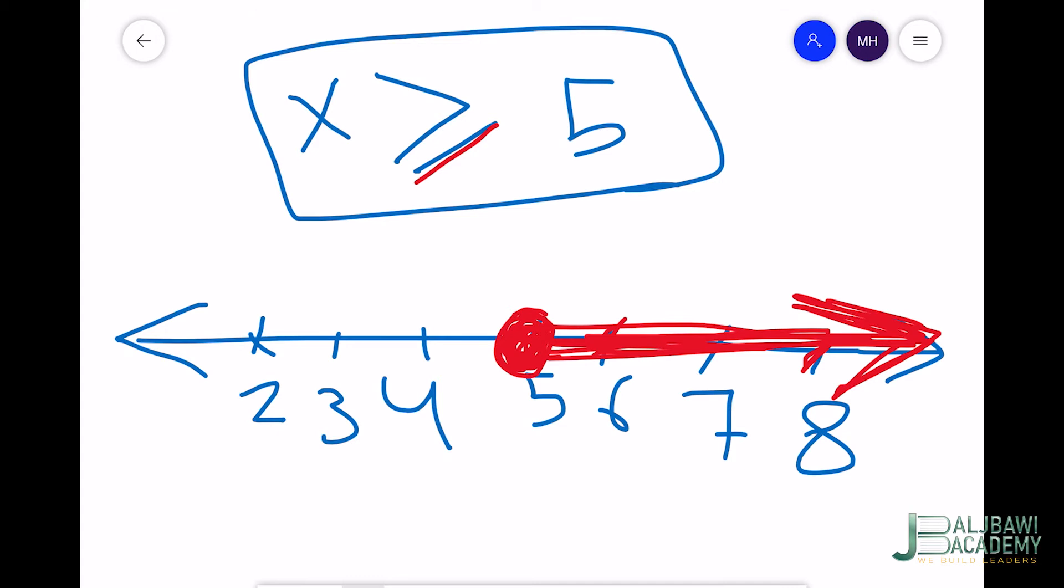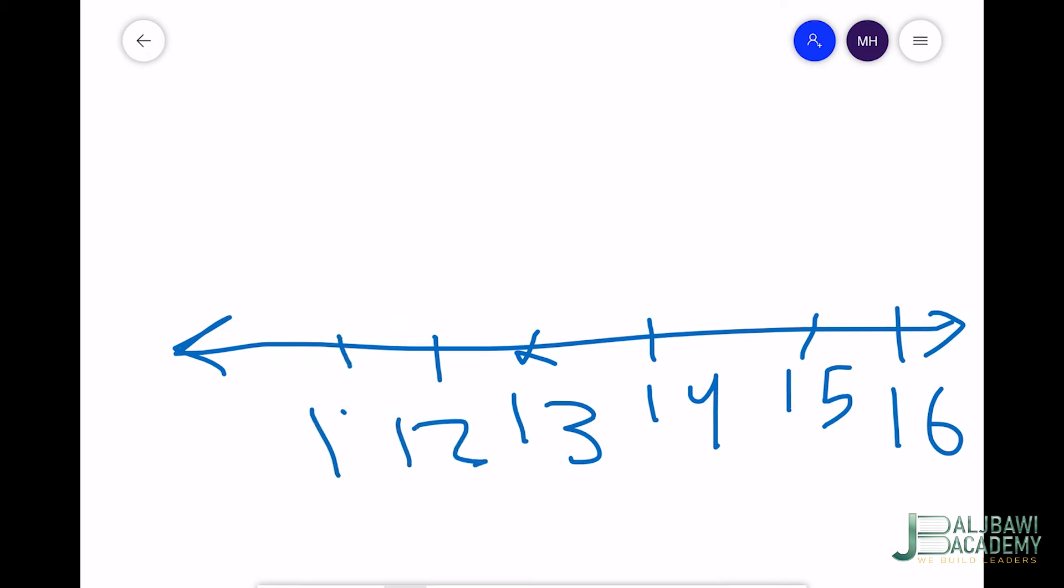Now, if I have an inequality graph, how do I represent it? Look at this graph. Here we put 13, 14, 15, 16. Here we put 12, 11, and 10. This is an inequality graph.